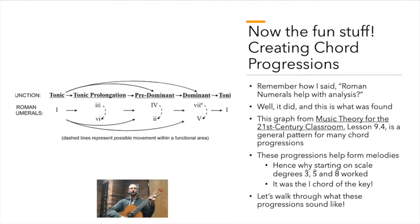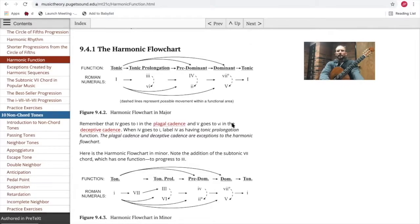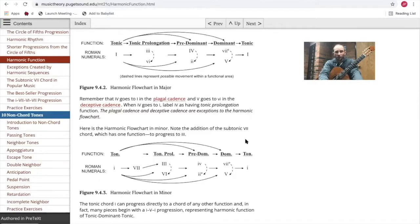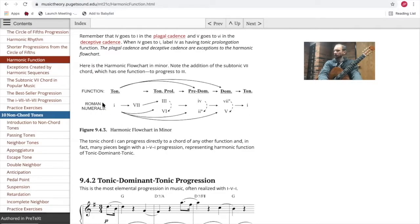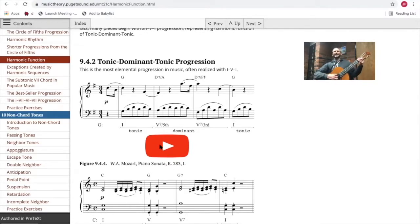There are two exceptions here. There's something called a plagal cadence — going from I to IV back to I — and there's also something called a deceptive cadence, where instead of going from V to I, you go from V to VI. We'll talk about those later. This just gets us started. Let's check out some music examples in Music Theory for the 21st Century Classroom. In Lesson 9.4.1, he talks about the harmonic flowchart. Don't worry about all the unfamiliar words — we're just playing around with some chords and this chart is a cool place to start.